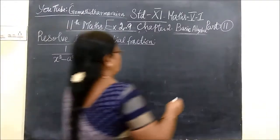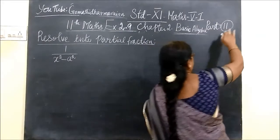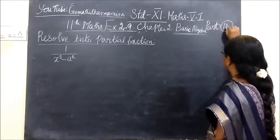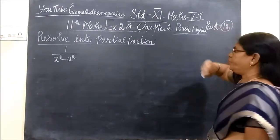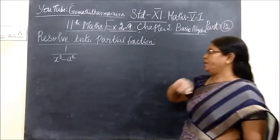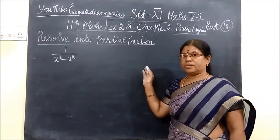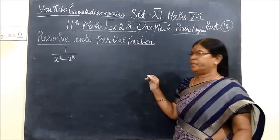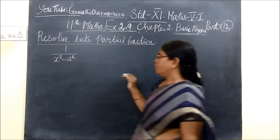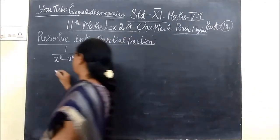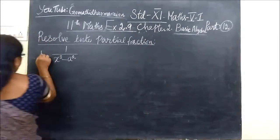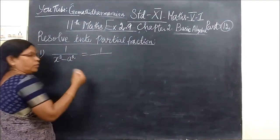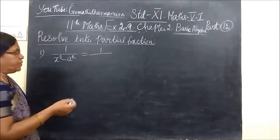So now we see possible result into partial fractions. In the last class we have seen type 1, type 2, type 3. Now we see the program. This is the partial fraction.